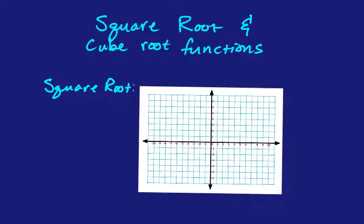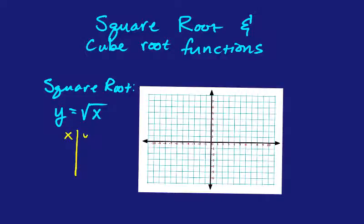For a square root function, you're going to have something very basic like y equals the square root of x. Normally when it comes to a function, you plug in x values and get out y values. If I were to make a table, I would pick x values and then take the square root to get the y value. One thing that's interesting about a square root function is that you can't square root negative numbers, so the first x value you can start with is 0. When you square root 0, you get 0.